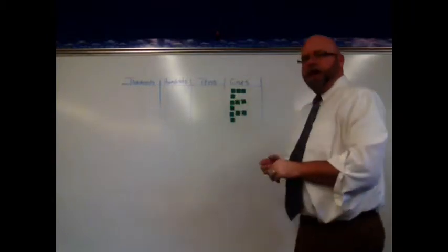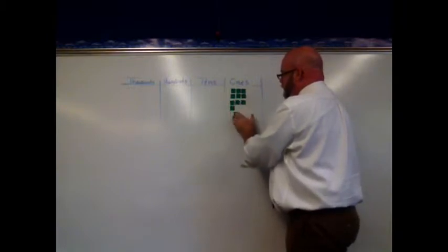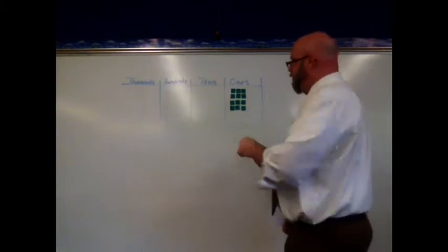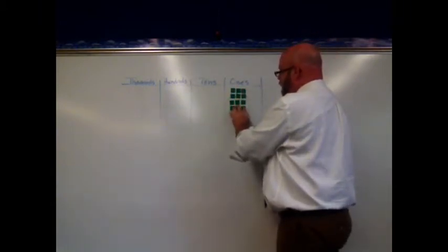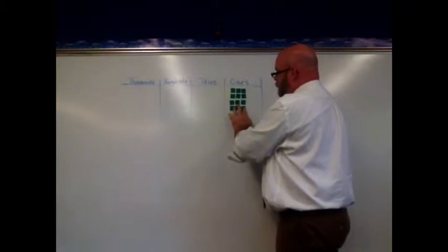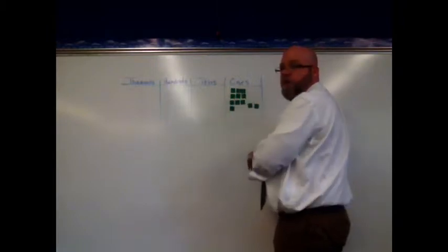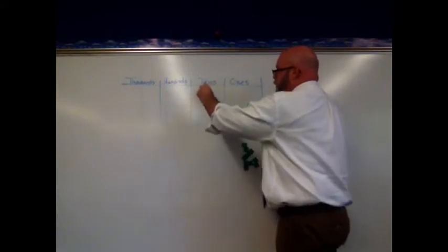When I look at that, I say, hmm, I can always regroup. Because we know any time that I get ten ones - one, two, three, four, five, six, seven, eight, nine - and more than ten ones, I can regroup that. I can take these ten ones, make them one ten.